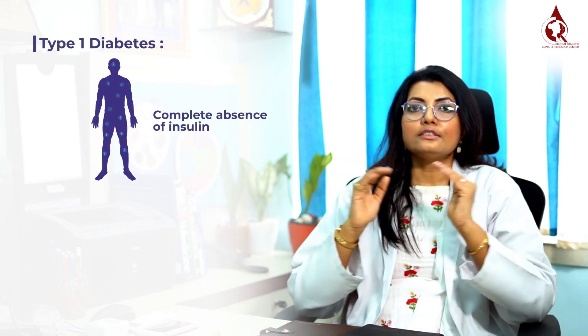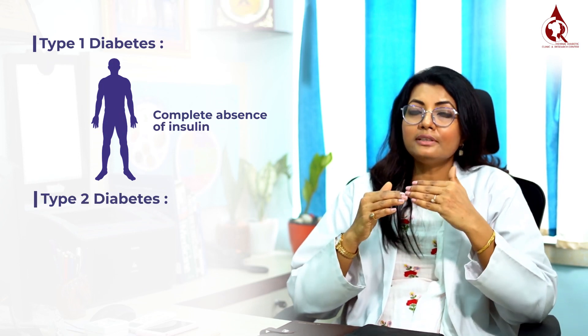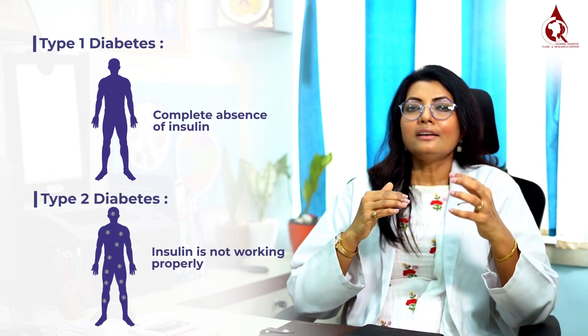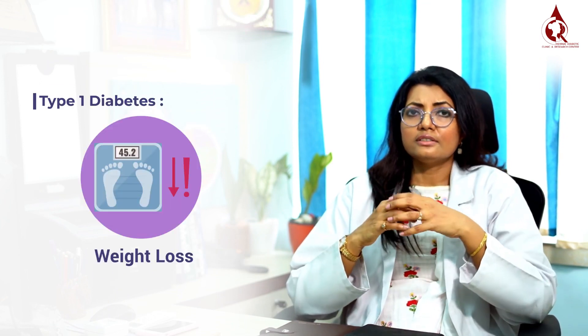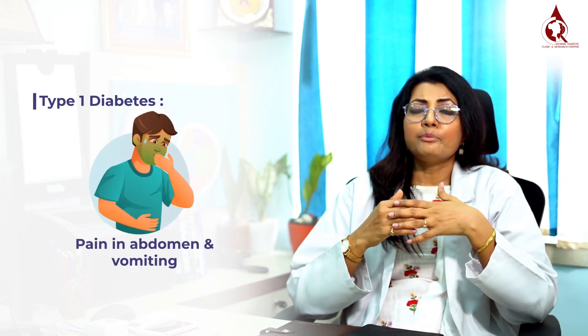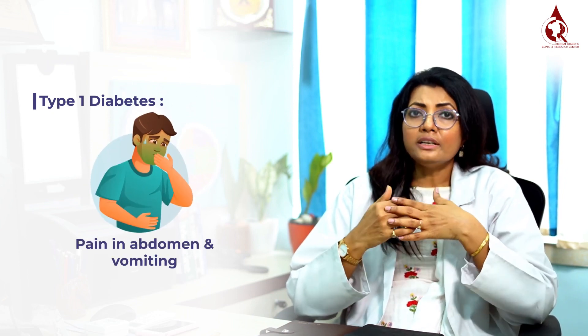There are some symptoms which are very particular for type 1 diabetes. In type 1 diabetes, there is complete absence of insulin, whereas in type 2 diabetes, insulin is there but it is not working properly. So in type 1 diabetes there is severe weight loss, and in very acute type 1 diabetes we see abdominal pain and vomiting — these types of complications we also see sometimes at the onset.